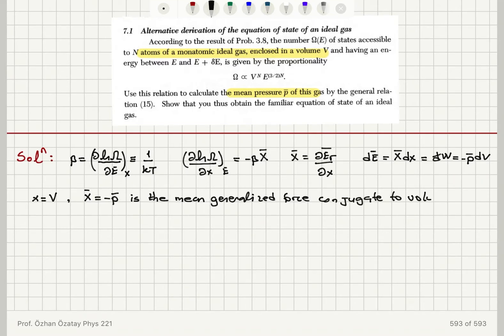we have x bar is equal to minus p bar. This is the mean generalized force conjugate to volume. That is basically what we have found out.